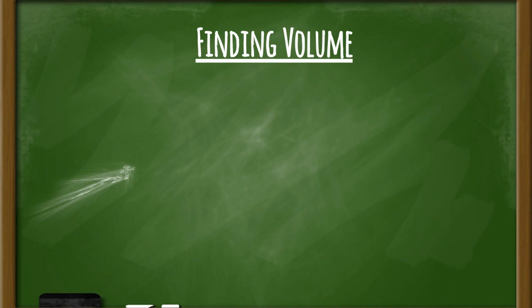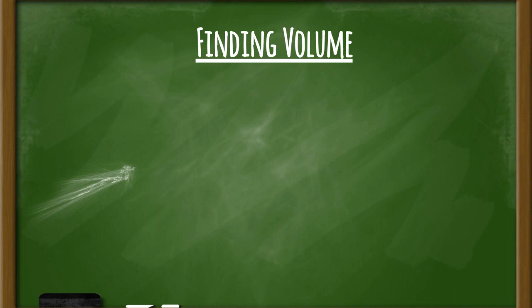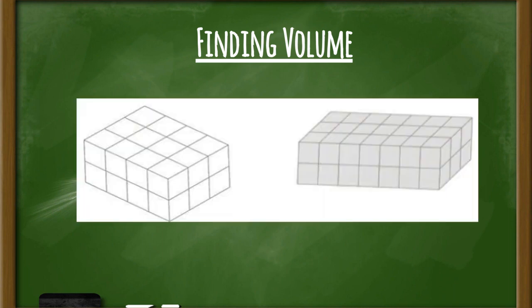Now it's your turn, mathematicians. I'm going to show you two more prisms. Your job is to find the volume of each. Remember, you can find different layers and count how many cubes are in each layer and multiply them, or you can find the length, width, and height and multiply all three together. Decide which strategy works best for you. The two prisms can be seen on the board now — pause the video, take your time, then come back to continue.